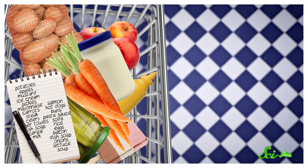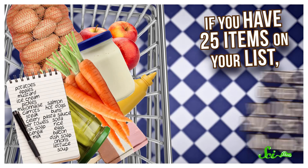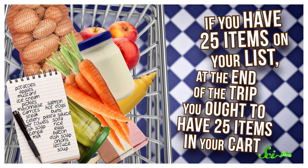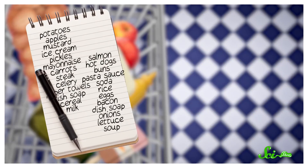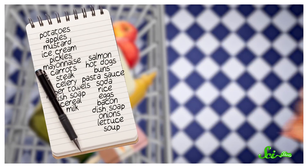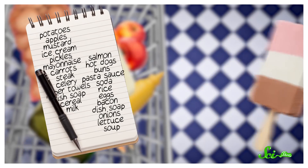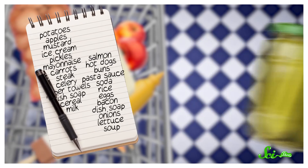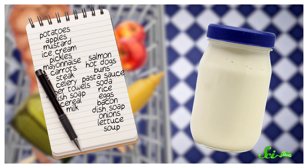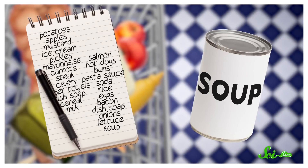A real-world example: think about grocery shopping. If you have 25 items on your list at the end of the trip, you ought to have 25 items in your cart. But to check that you've got the right things requires comparing every one of those items to what's on your list. If you're lucky, every time you pick something out of your cart it matches the next item on your shopping list, then you'd only need 25 comparisons in total. But maybe you got a couple impulse buys, maybe you skipped some stuff, in which case you'd be checking each item against the whole list — like, okay, can of soup. Is this ice cream? No. Is this pickles? No. Is this mayonnaise? This is not good.